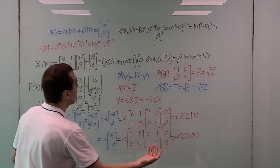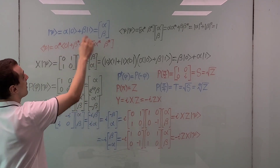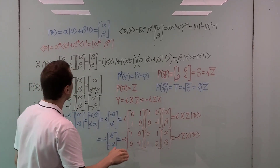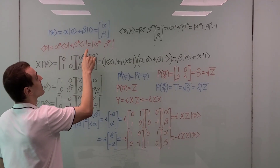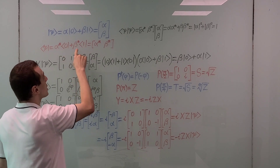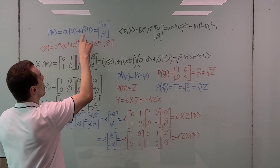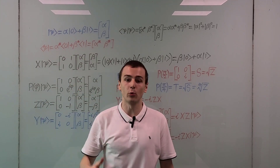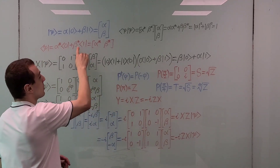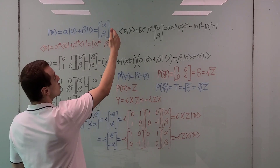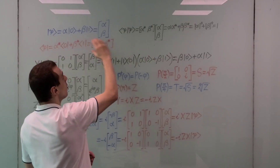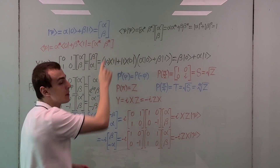We can also find the bra versions. The bra versions are the Hermitian adjoints. Here we have the bra version of this general state psi, and then we have a linear combination of the bras. Notice there are little stars on these coefficients because these are complex conjugates of those coefficients. Alpha and beta are not restricted to just the real numbers — they can be complex numbers. The Hermitian adjoint of this column vector turns it into a row vector with all entries complex conjugated.